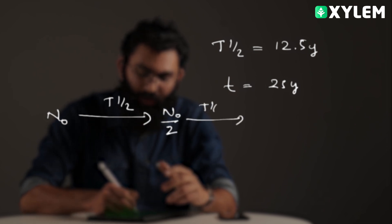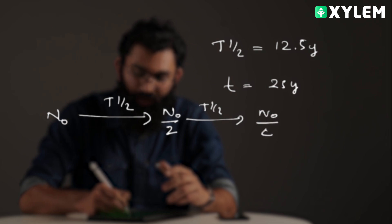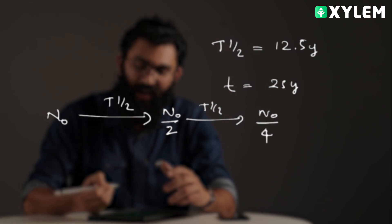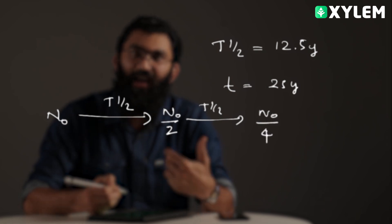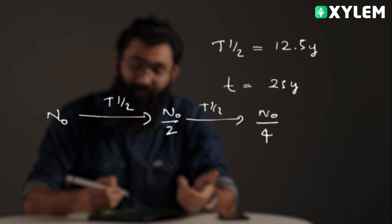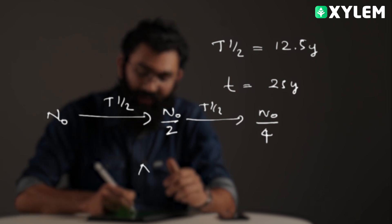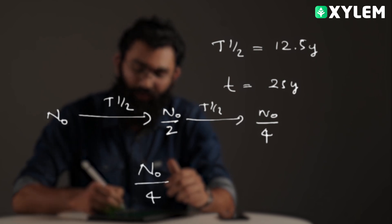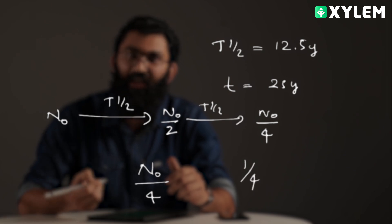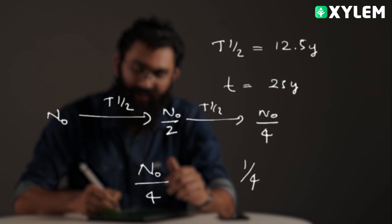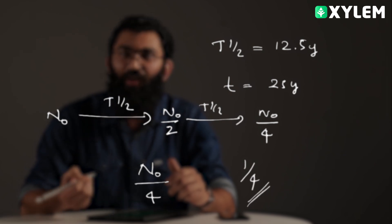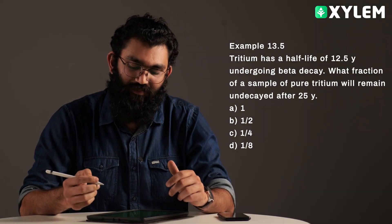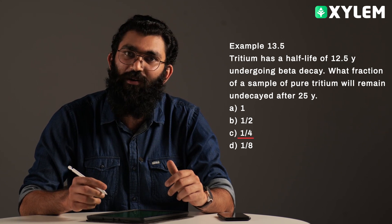After the next half-life it is N0 by 4. So, the second half-life gives N0 by 4. The fraction of undecayed nuclei that remains is 1 by 4. So, the answer is 1 by 4.